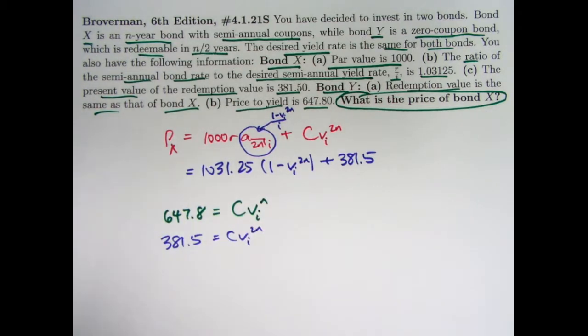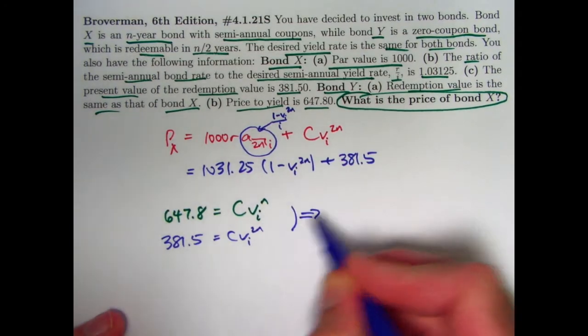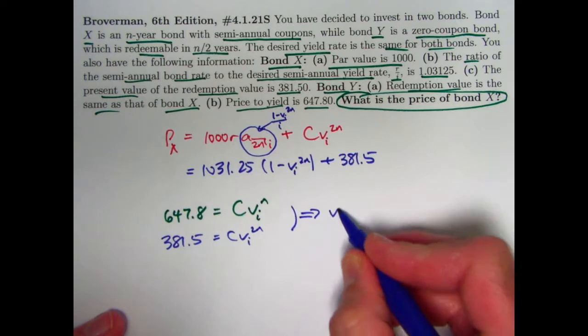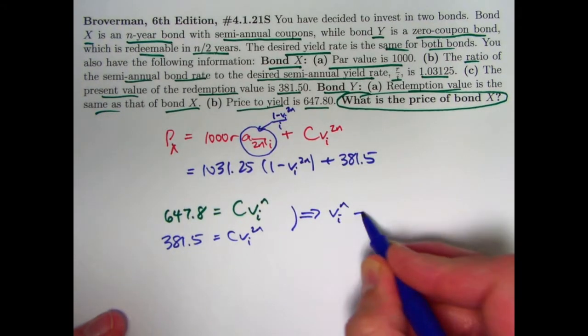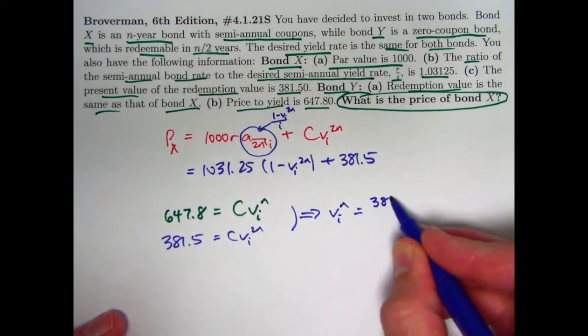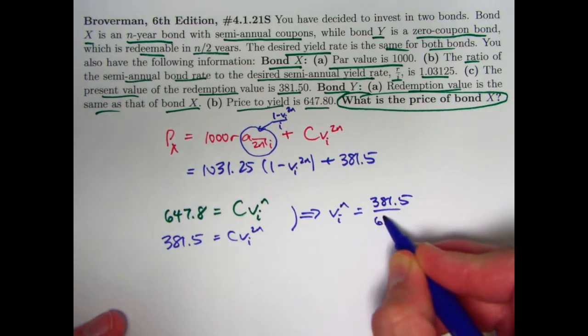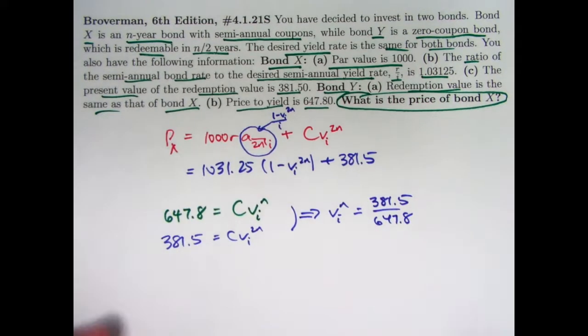I can now divide the bottom equation by the top equation. The C's would cancel, and I'd be left with V^I to the N is 381.5 divided by 647.8. I'm dividing the second equation by the first one.